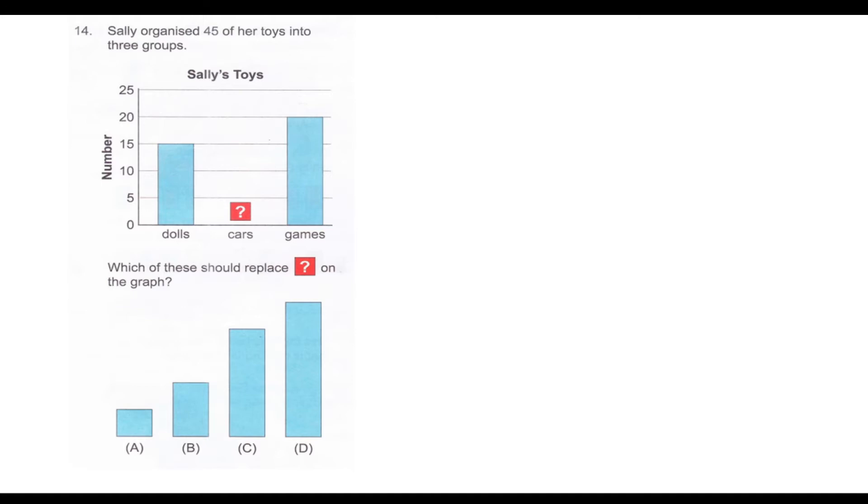Next question is on data handling. Sally organized 45 of her toys into 3 groups. Which of these should replace the question mark on the graph? Based on the bar diagram, Sally has 15 dolls and 20 games. In all she has 45 toys, which is the sum of dolls, cars and games. But dolls and games together sum up to 35. So the number of cars equals 45 minus 35, which equals 10. We can estimate that B would be the bar indicating the number 10.